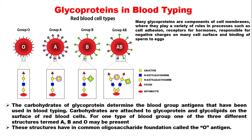Glycoproteins are proteins that have sugar residues attached to them. They are very important in blood grouping and used in blood typing. Different blood types — O, A, B, and AB — are determined by glycoproteins. Many glycoproteins are components of the cell membrane, where they play a variety of roles including cell adhesion, cell receptors for hormones, ion channels, and cell surface binding of sperm. The carbohydrates of glycoproteins determine the blood group antigens used in blood typing.